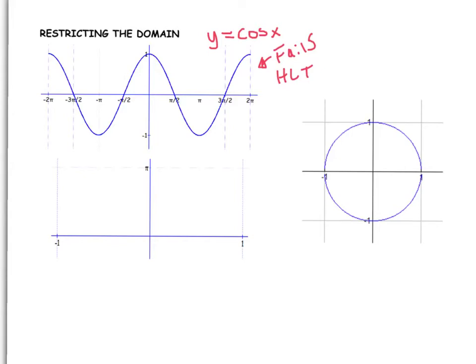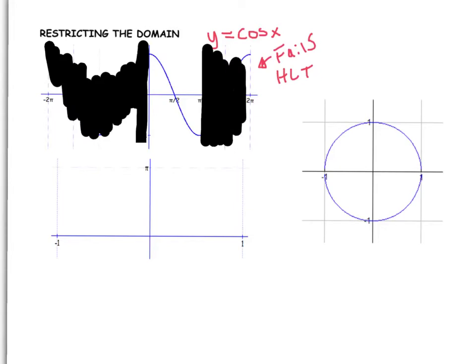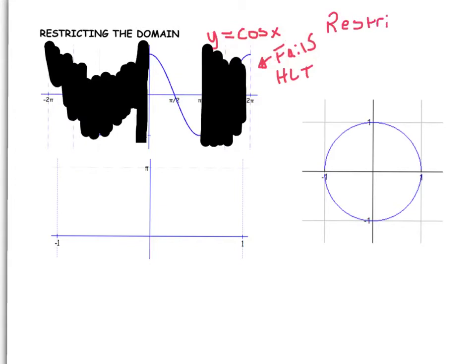There are many things you could do to fix this. The math community has decided to eliminate all x values up until 0, and all x values after π. And so that means that our restricted domain that we're going to generate the inverse from is 0 to π.